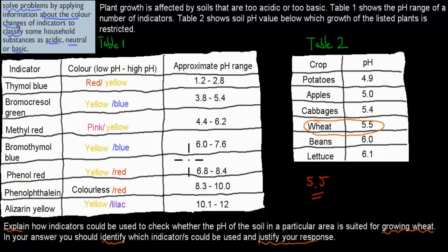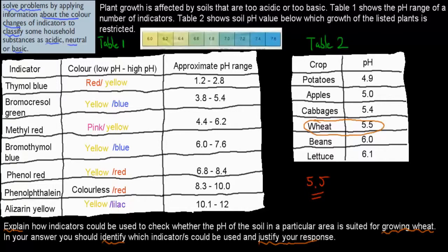And then for this table, we've given the different indicators on this side. We've got the color changes, the ranges, and we have the approximate pH range. What that means, I'll show you an example, is this here. We have bromothymol blue, which is this indicator right there. And as you can see, when it says low pH, it has a color yellow, and high pH, it has a color blue.